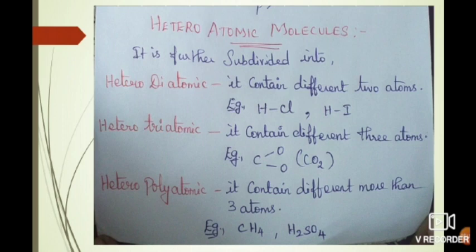Hetero-triatomic molecules contain three different kinds of atoms. For example, carbon dioxide contains one carbon atom and two oxygen atoms. So it is a hetero-triatomic molecule.